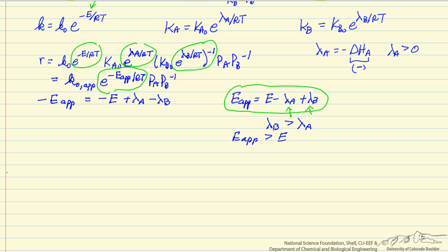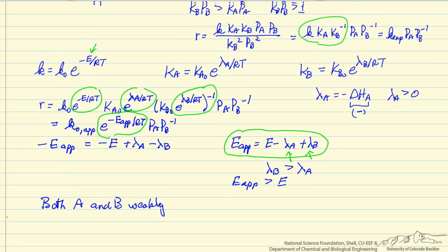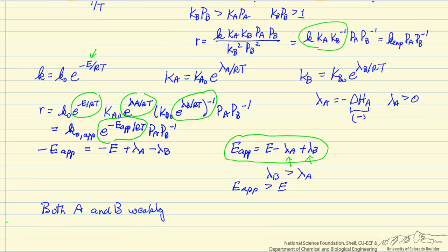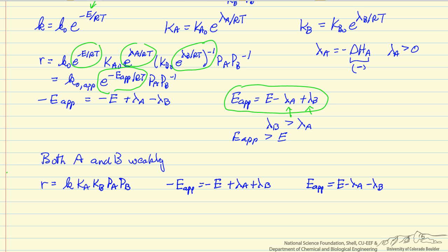We can certainly imagine other possibilities. If both A and B are weakly adsorbed, then the constant 1 in the denominator of the original rate expression is large relative to the other two terms. Performing the same type of substitution and determining the apparent activation energy, we find that in this case E_apparent is going to be less than E. Remember, the heats of adsorption are both positive numbers, so they effectively subtract from the surface reaction activation energy.